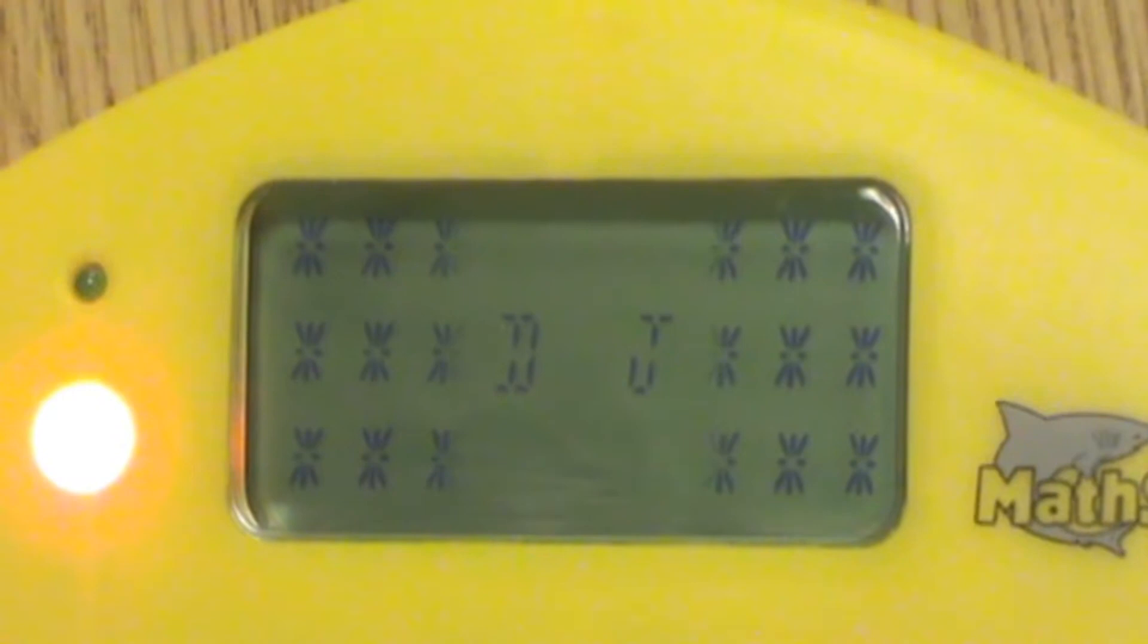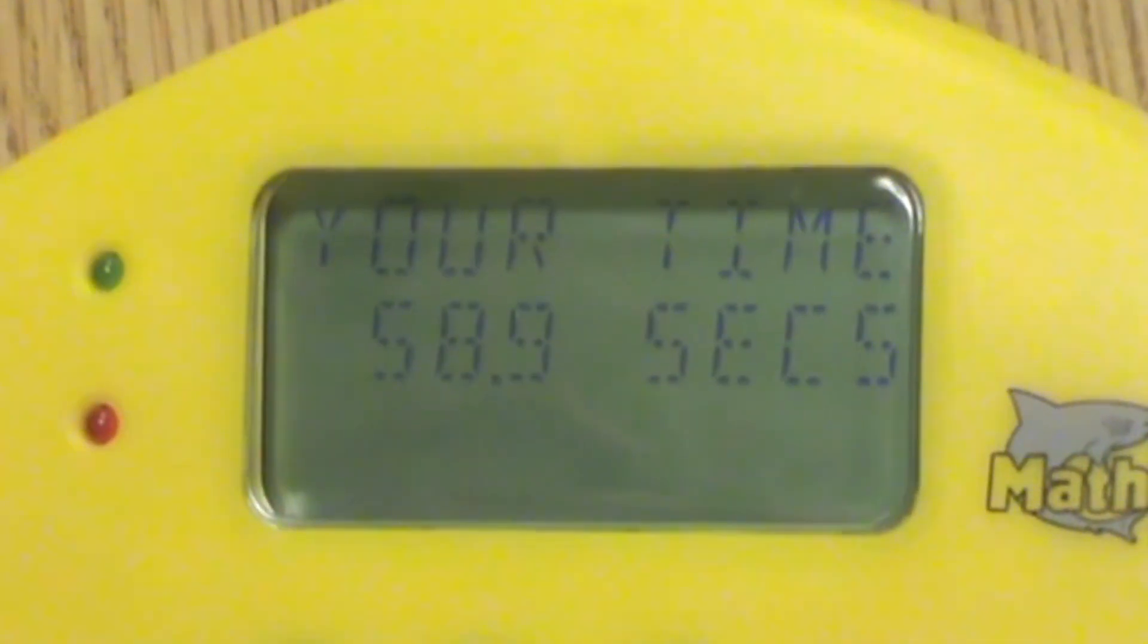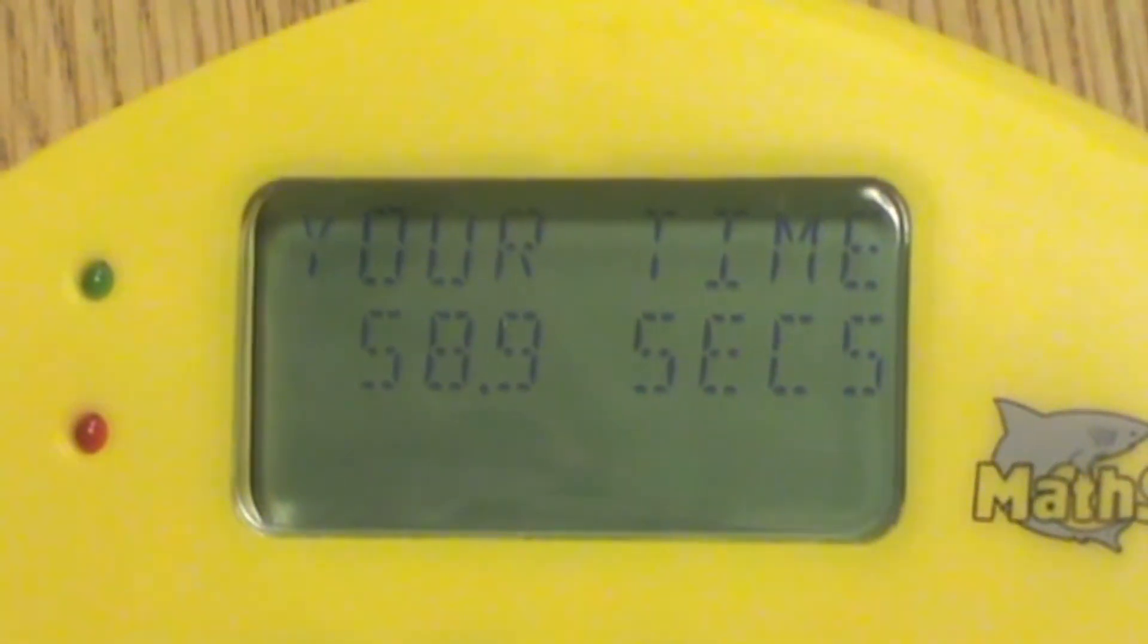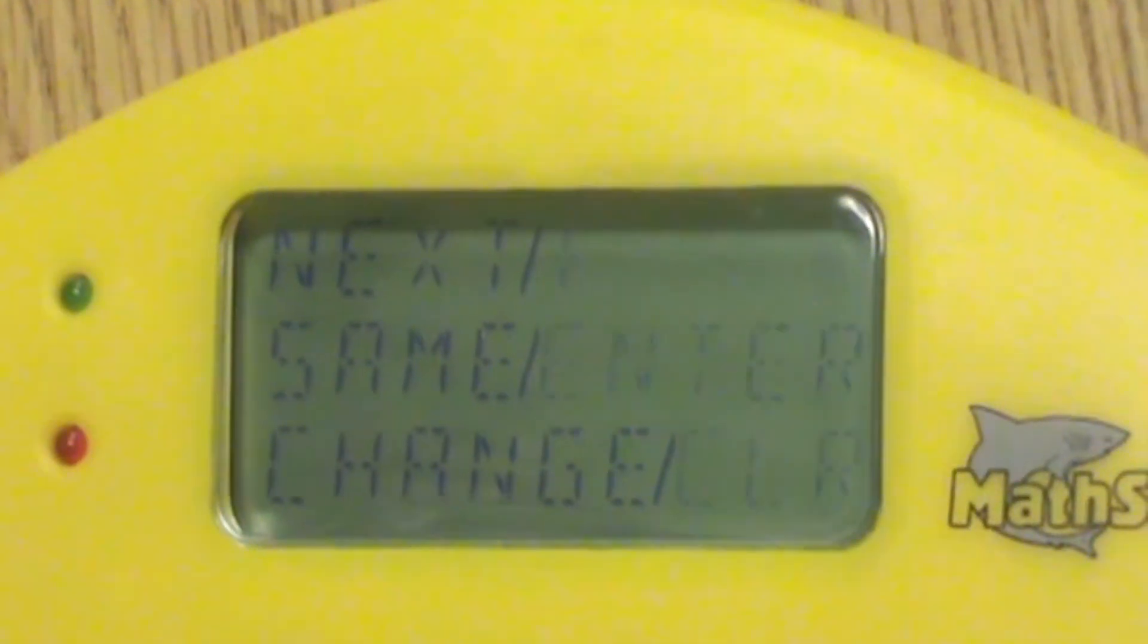A player's elapsed time is shown at the end of the game. Ours was 58.9 seconds. This is a good way for students to track their progress.